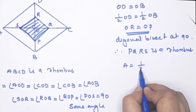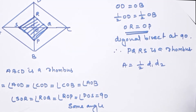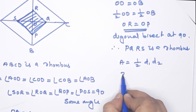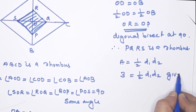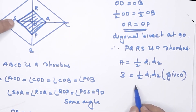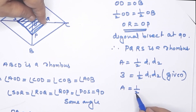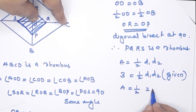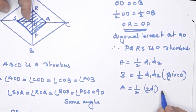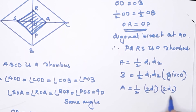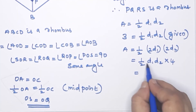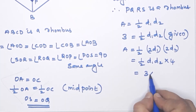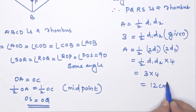The area of the small rhombus PQRS = ½ × D1 × D2 = 3 cm². The diagonals of PQRS are half those of ABCD, so the diagonals of ABCD are 2D1 and 2D2. Area of large rhombus = ½ × 2D1 × 2D2 = 4 × (½ D1 D2) = 4 × 3 = 12 cm².